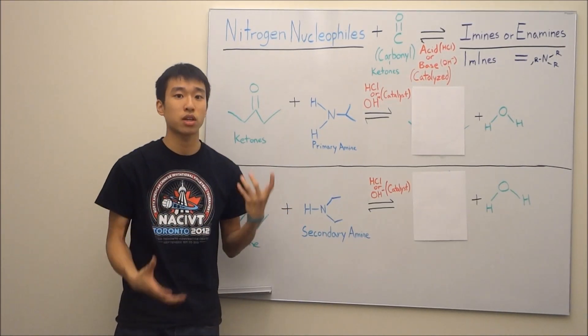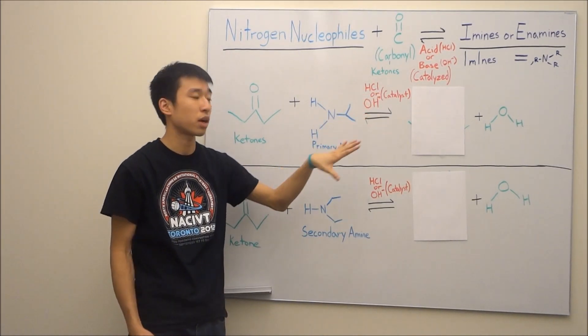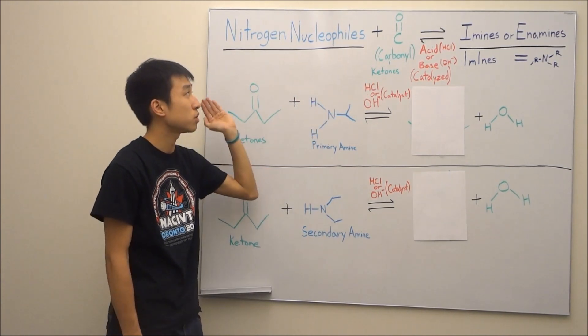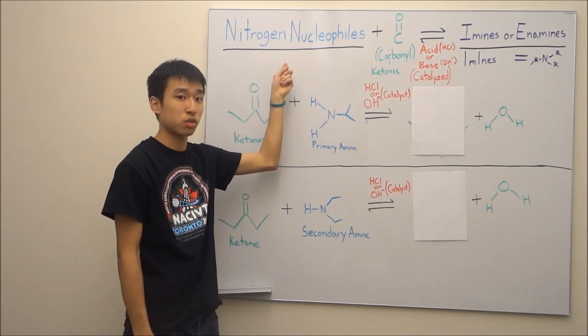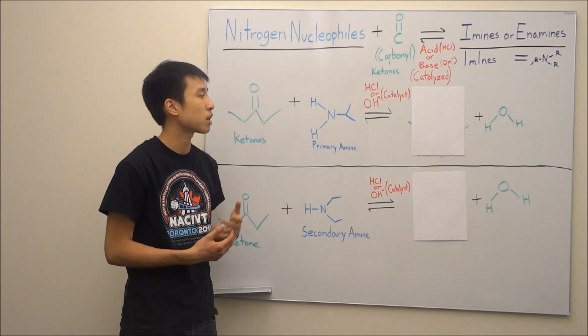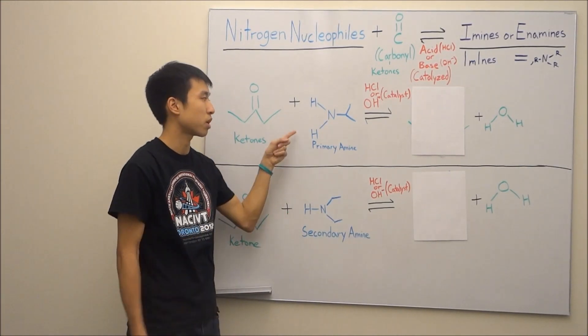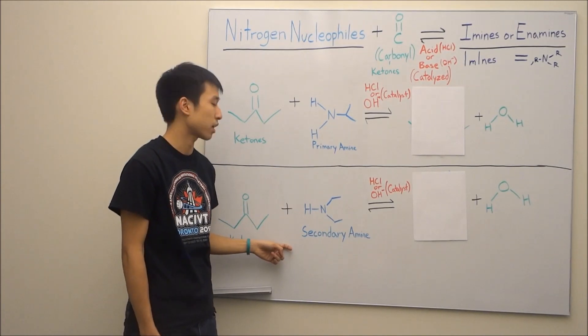So when you want to create an imine or enamine, which I'm not going to explain to you guys yet what they are, but when you create them, what you usually use is a nitrogen nucleophile. So the most common example is going to be amines, which I use in my example. I use a primary amine and a secondary amine.